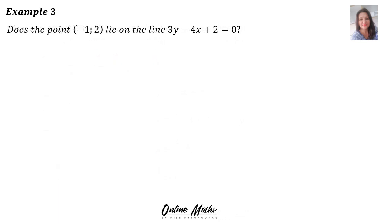Example 3: Does the point (-1,2) lie on the line 3y minus 4x plus 2 equals 0? Now, when we want to find out whether a point lies on a line or not, what we do is we're going to substitute the point consisting of an x and a y into the equation.